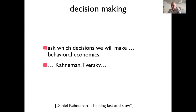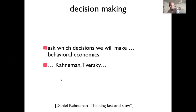The other direction in decision-making research concerns the content of decisions across different time scales. This is studied in behavioral economics — Kahneman and Tversky received the Nobel Prize in Economics for their work on how rational human decision-making is, how it depends on time horizons, and differences between spontaneous buying decisions versus deliberate ones. This field is becoming increasingly mainstream.